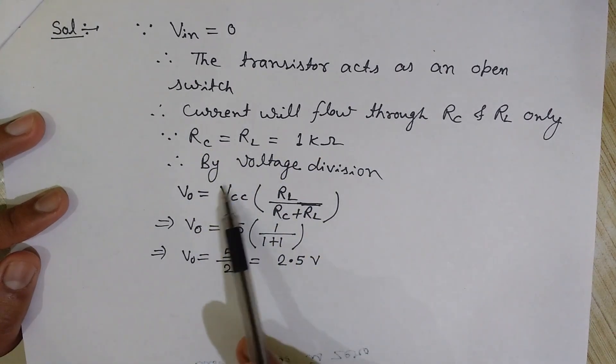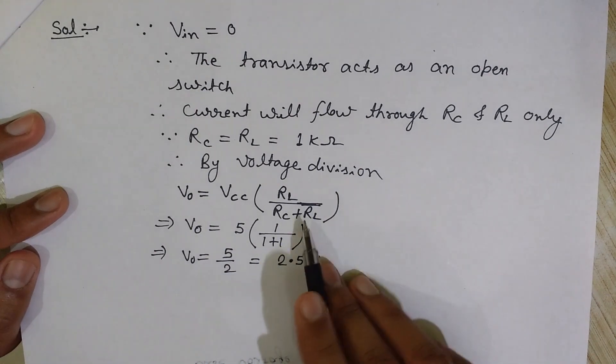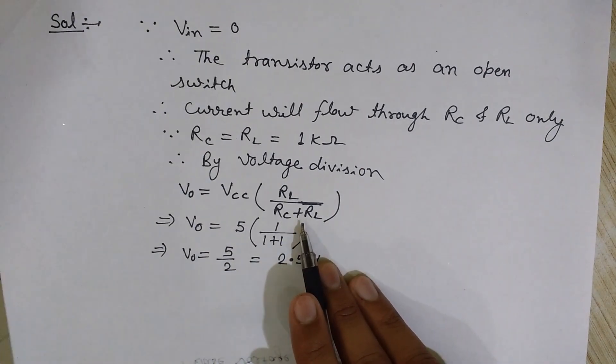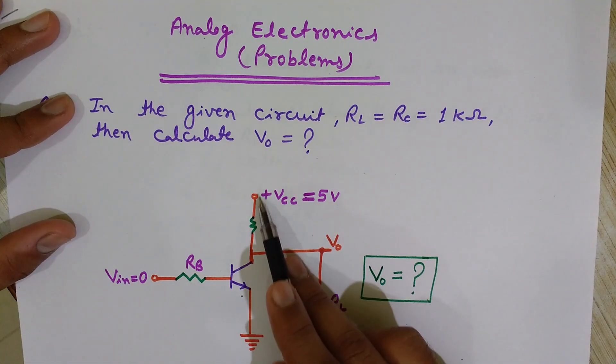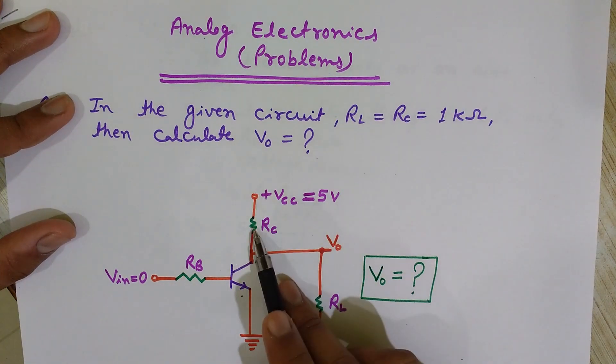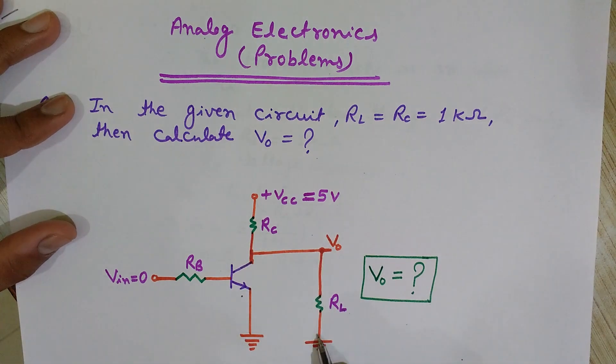We know the value of each of these resistors, so by voltage division you can use the voltage division, or simply by observation you can see that here 5 volt is applied and RC and RL are equal.